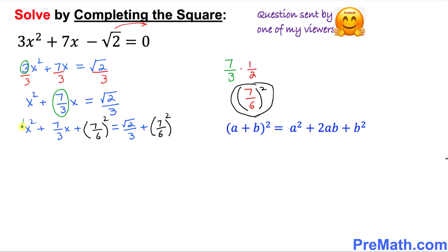Now let's focus on the left-hand side of this part. This represents a complete square and we're going to be using this formula to complete this square. So this could be written as, by using this formula, (x + 7/6)². Alright, so this could be written as this one.